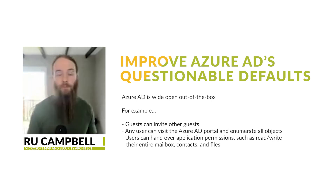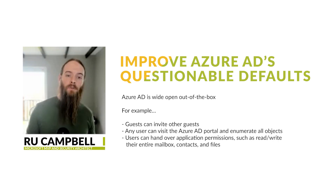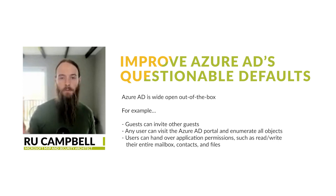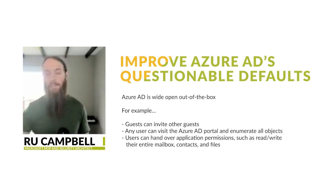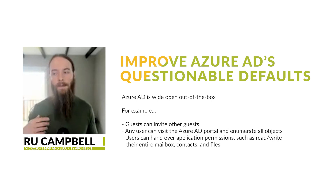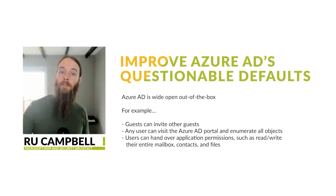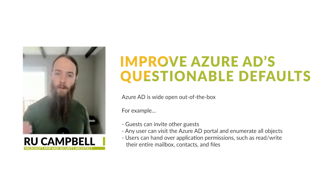Lastly, and this is one we're going to show you a demo of with regards to the type of threat it can pose: by default, your users can hand over permissions to OAuth apps. You may be familiar with this — when you sign into an app it may prompt you: do you want to sign in with Apple, Facebook, Twitter, and often Office 365 will be an option. For example, a calendar app — I sign in with my Office 365 account and hand over permission to read my calendar. But apps can go further than that: they could be looking at files, your email, and all sorts of other stuff. We're going to demonstrate what that looks like when it goes wrong and why you should pull back those permissions.